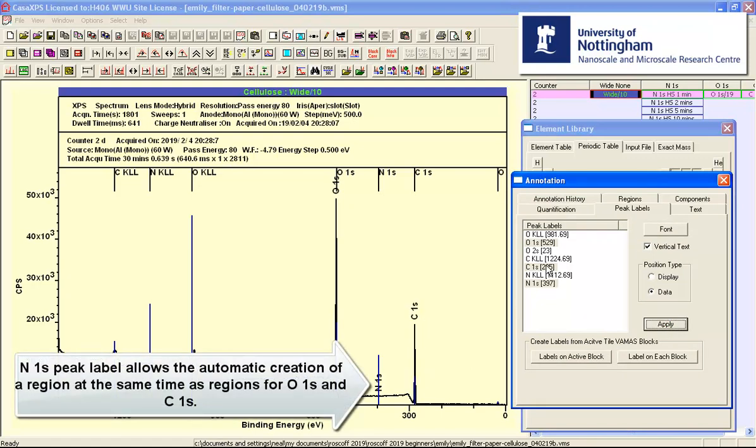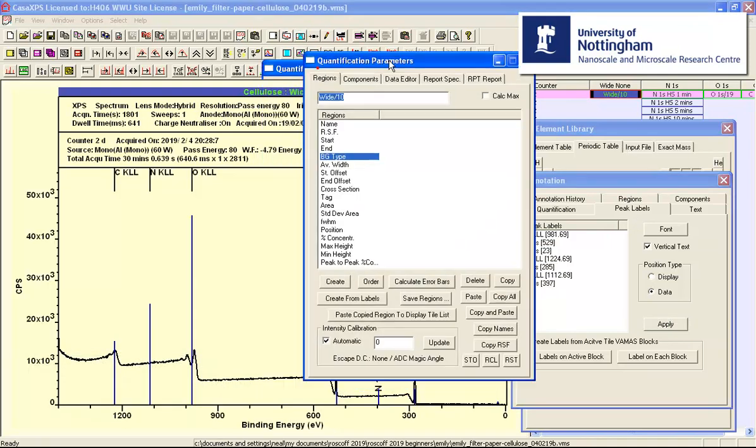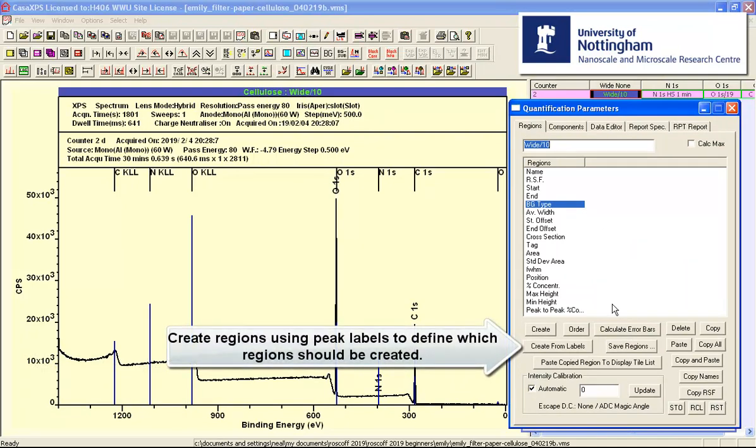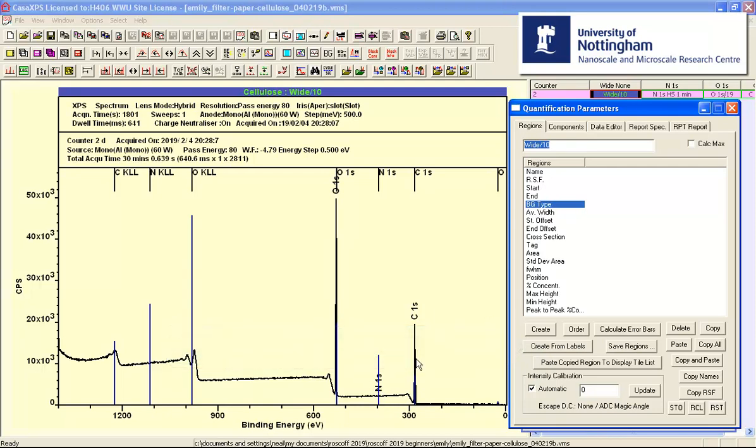And these are indicated as peak labels. When I use the quantification parameters dialog window on the regions property page, I can say create from labels. And this will force the creation of regions based on these labels that provide the link between the element library and these peaks.